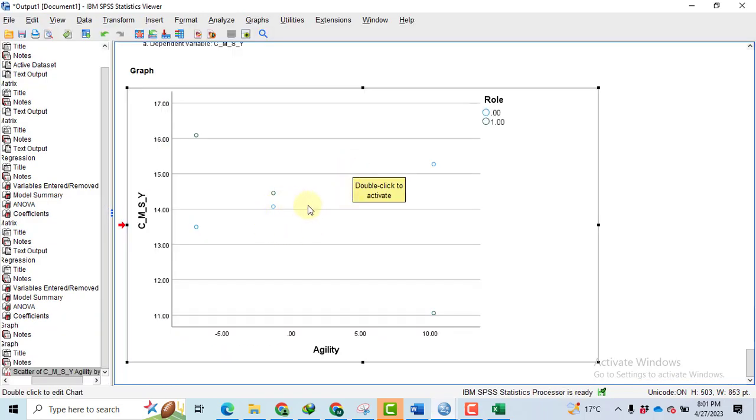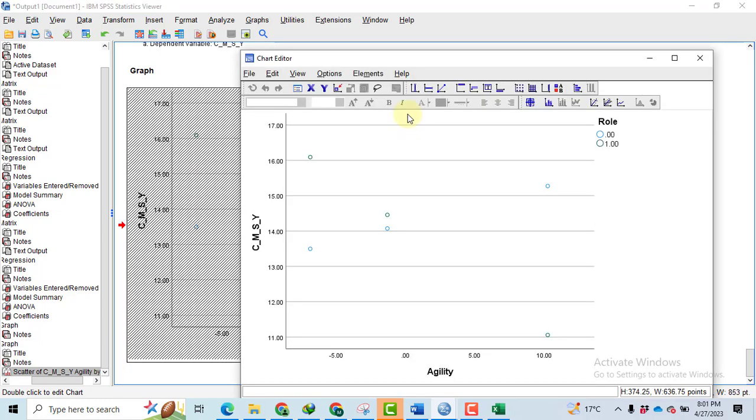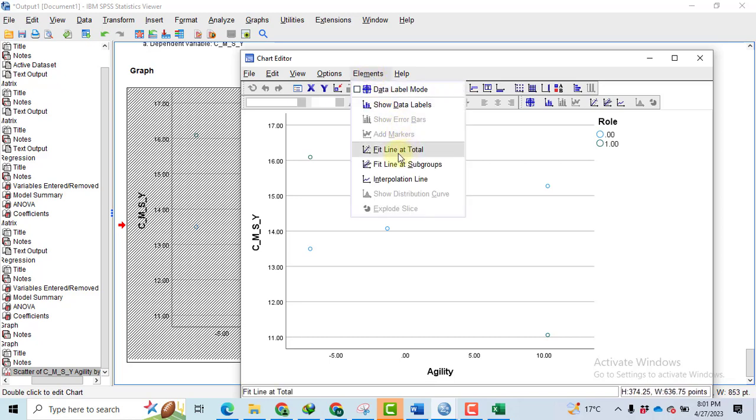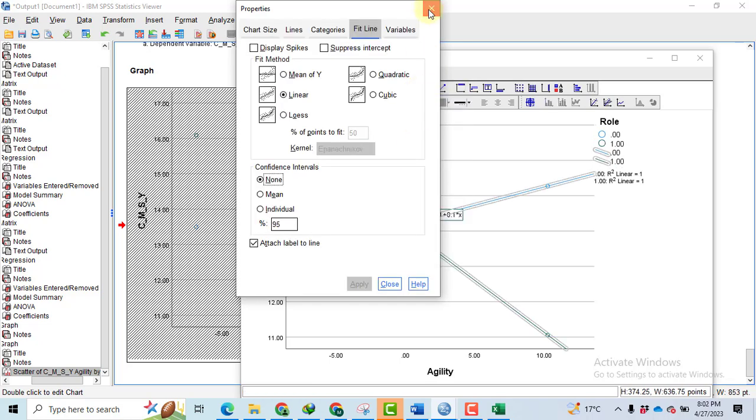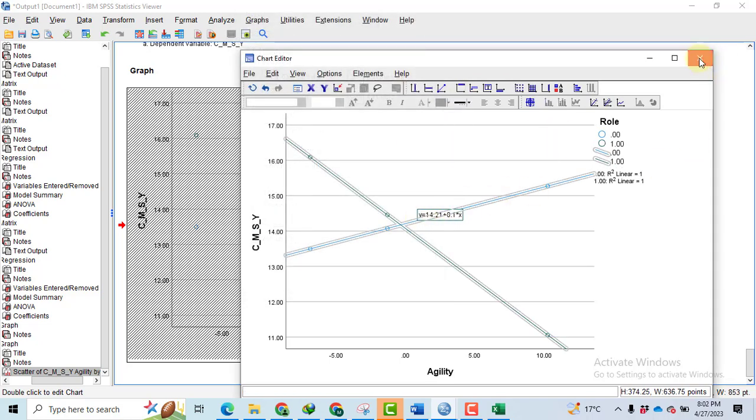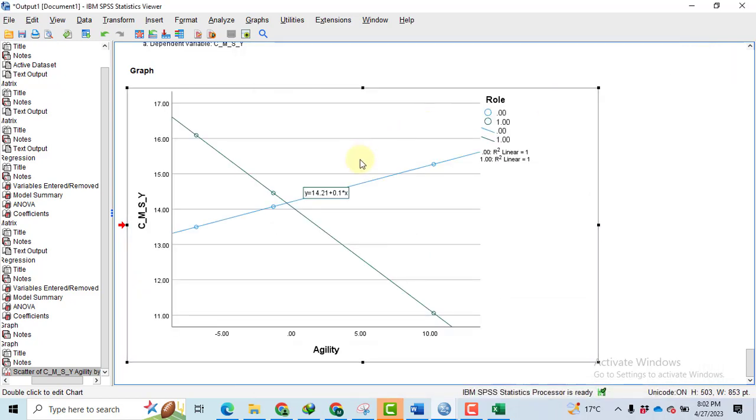You can only see such few points in the graph. So in order to get the lines, double click on the graph. After that, click on the elements and then fit line at the subgroup because I have two subgroups. So after clicking, I got such two lines, cancel it and you got such a graph.